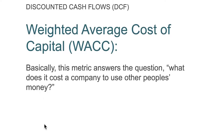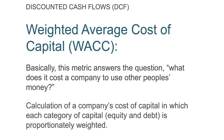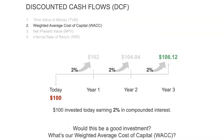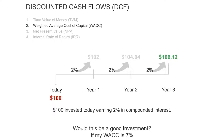Weighted average cost of capital basically answers the question: what does it cost a company to use other people's money — investors' equity or borrowed debt? There's a fancy calculation involved, but what you're really looking at is: what's our cost of capital, and you want to make sure your return is much greater than that cost of capital. So if that same $100 investment becomes $106 in three years, but your weighted average cost of capital is 7%, it's not a great investment — you're paying 7% every year and only getting a 2% return. That's the concept of weighted average cost of capital.